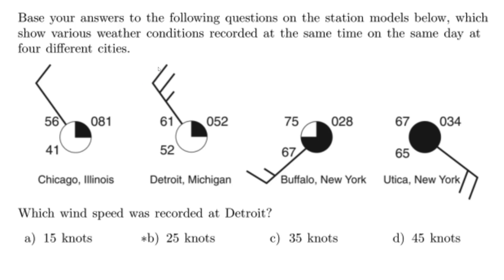So remember, we're looking at these small lines. The smaller one is 5, the bigger lines are 10. So 5 plus 10 plus 10 is 25 knots.